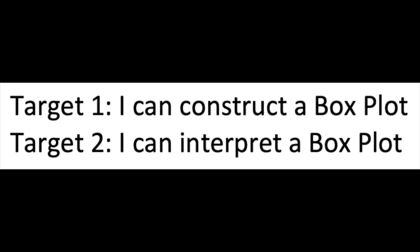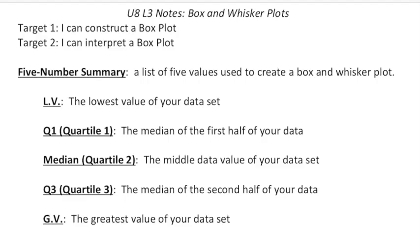Welcome to unit 8 lesson 3 where we will be learning how to construct and interpret box plots. Before we can start talking about box plots, which are also known as box and whisker plots, we need to learn about something called the five number summary for which the box plot is built off of. This five number summary is a list of five values that are used to separate the data into four equal chunks.